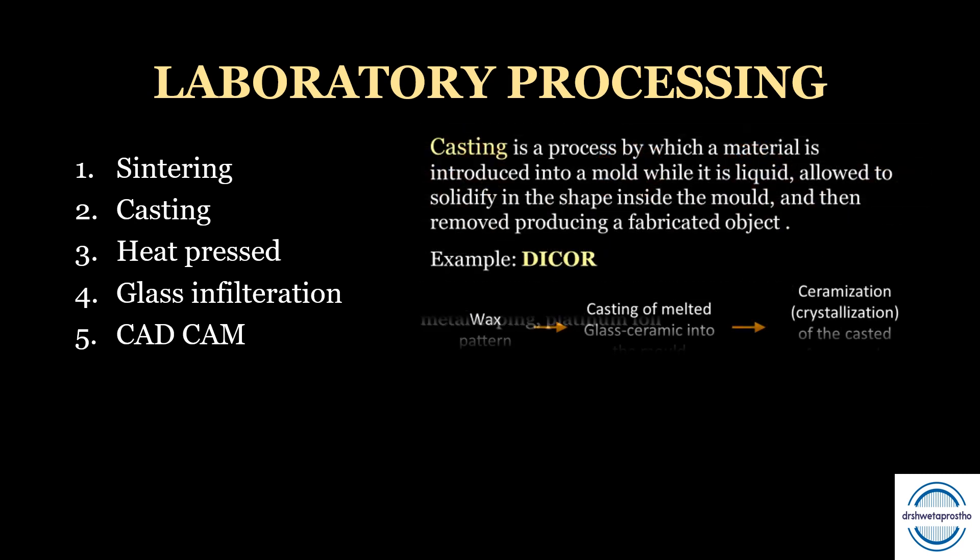The second processing method is casting. Casting is the process in which material is introduced into a mold while liquid and allowed to solidify. First, the wax pattern is formed; then casting of the melted glass ceramic is done into the mold; then ceramization or crystallization of the casted framework takes place. An example of casting ceramics is Dicor. The main advantage is that it can be machined and shaped just like metal.